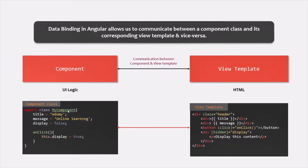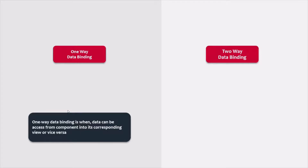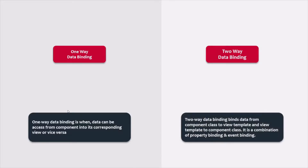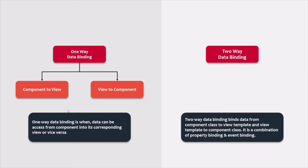We can divide data binding into two types: one-way data binding and two-way data binding. One-way data binding is when the data can be passed from component to its view template or from the view template to its component. Two-way data binding is when the data can be passed in both directions — from the component to view template and at the same time from view template to component. We can divide one-way data binding into two types: when data is passed from component to its view template, and when data is passed from view template to its component class. In two-way data binding, the data can flow in both directions.